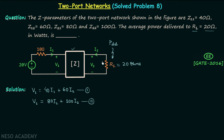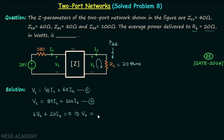Now I will apply KVL in this loop. We will have V2 plus RL multiplied by I2 equal to 0. With RL equal to 20 ohms, we get V2 plus 20 times I2 equal to 0, or the output voltage V2 is equal to negative 20 times the output current I2. Let this be equation number three.